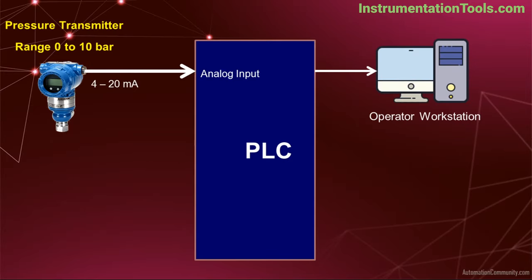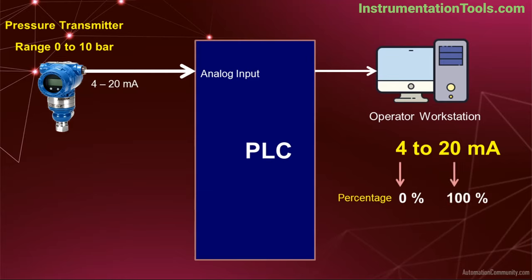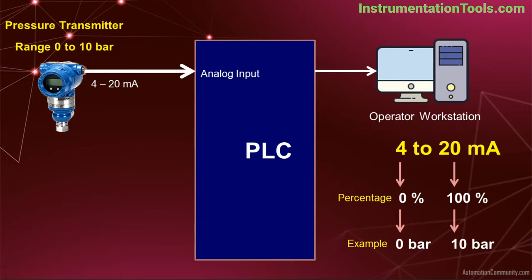Now let's discuss a pressure transmitter with 4 to 20 mA current output. Assume the pressure transmitter is configured with a range of 0 to 10 bar. 4 mA represents the 0% process variable and 20 mA represents the 100% process variable. In this example, 0% of the process variable is 0 bar and 100% of the process variable is 10 bar. The PLC is also programmed with the same range of 0 to 10 bar, and calculates the received mA into the equivalent pressure and displays it to the operator.